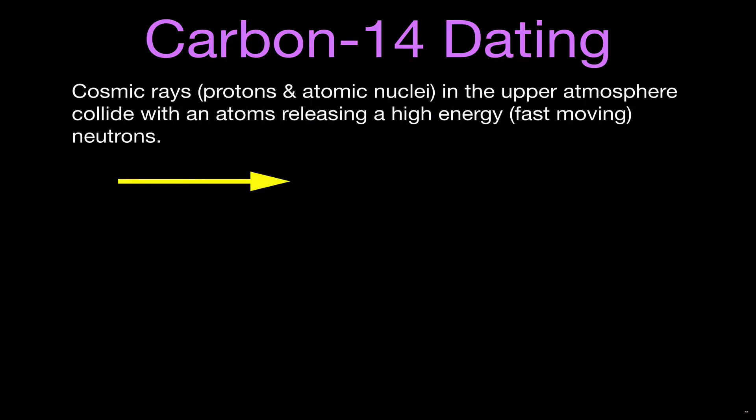So this is where the carbon-14 story begins. The story starts in Earth's upper atmosphere. In Earth's upper atmosphere, there are cosmic rays coming into the atmosphere. Those cosmic rays come from outside the Earth's atmosphere — from places like the solar wind, from exploding stars ejecting material into the universe. The cosmic rays are not really rays like light rays; they are high-energy particles such as protons, neutrons, and other atomic nuclei.